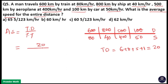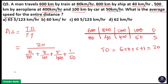Total distance equals 20 parts. Total time equals time for the first part: 6 parts divided by 80, plus second part 8 divided by 40, plus third part 5 divided by 400, plus fourth part 1 divided by 50. The LCM of 80, 40, 400, and 50 is equal to 400.